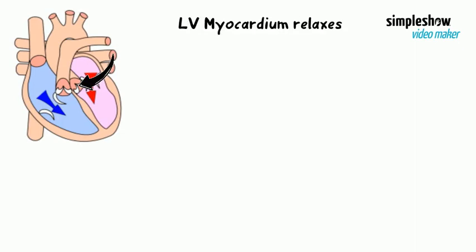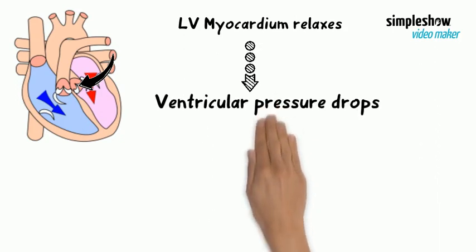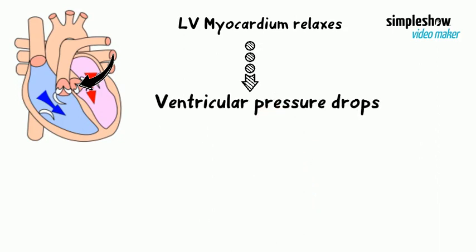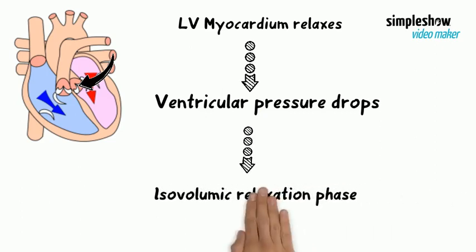When the aortic valve closes, the left ventricular myocardium begins to relax and ventricular pressure drops rapidly. In this phase, the ventricular volume does not change. This stage is known as the isovolumic relaxation phase.